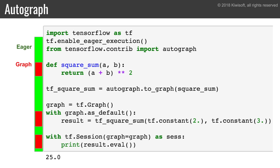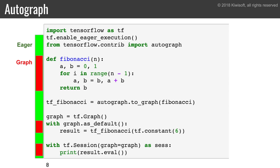Then we start a session, and we evaluate the resulting tensor, and we get the result. In this simple example the benefit is not obvious, so let's look at a more complex function. Here I just wrote a simple Fibonacci function that computes the nth number in the famous Fibonacci sequence. Notice that this function contains a loop, so when Autograph converts this function to a TensorFlow function, it knows that when it is run in graph mode, it should create a graph that uses TensorFlow's while_loop operation. If you have ever tried to use loops in TensorFlow graphs before, you've probably found it very painful, so you will love Autograph.